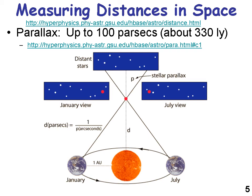One way to measure objects in space and their distance from the Earth is with parallax, which is good up to about 330 light years or 100 parsecs. Basically, you're triangulating from one side of the Sun when the Earth is in space in January versus the other side of the Sun when the Earth is in space in July. You can see the red dot in the January view shift relative to the same grouping of background stars, and that parallax can be measured.